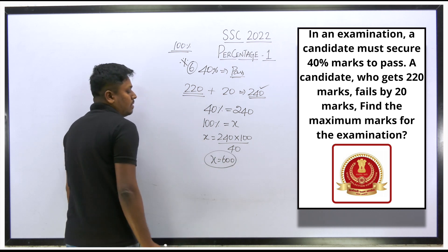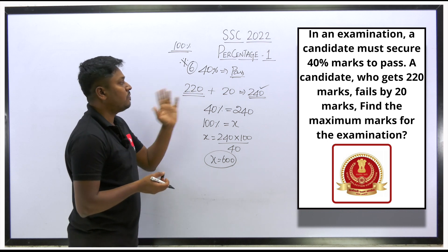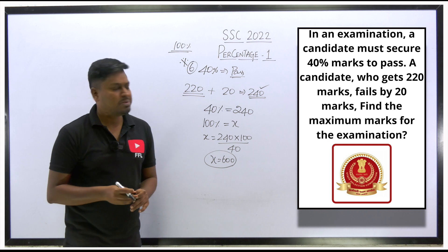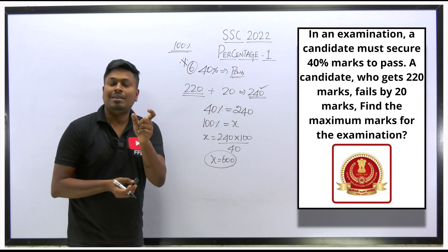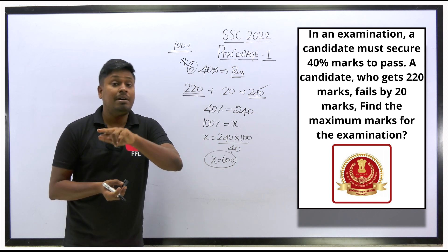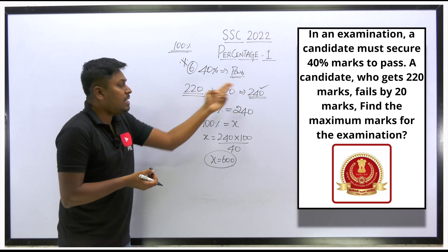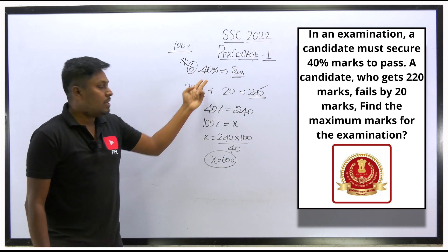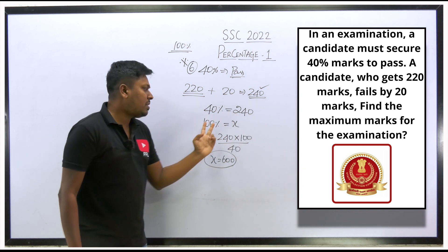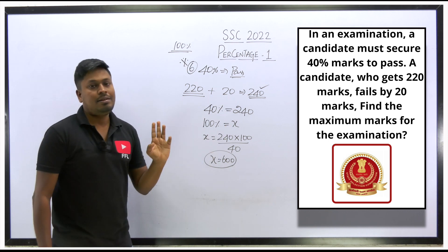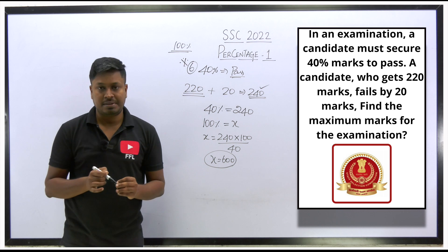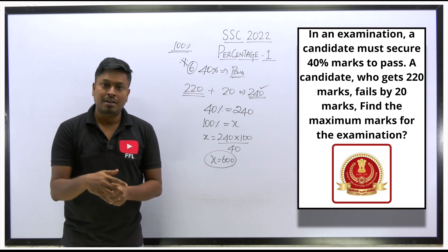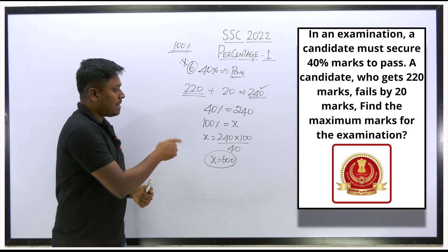Setting 100% = x: x = 240 × 100 / 40 = 600. The maximum marks for the examination is 600. Key logic: failed by 20 means pass mark = 220 + 20 = 240, and since pass percentage is 40%, the total marks = 600.